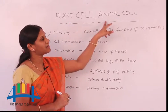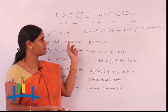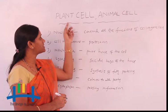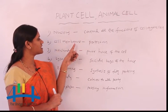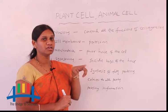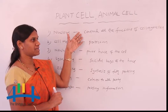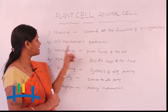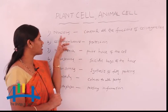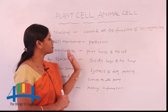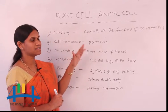The second cell organelle is the cell membrane, which is also present in both plant and animal cells. The function of the cell membrane is protection — it gives protection to the cell. All cell organelles are protected by the cell membrane. While the nucleus controls the activities, the cell membrane gives protection to all the remaining cell organelles.